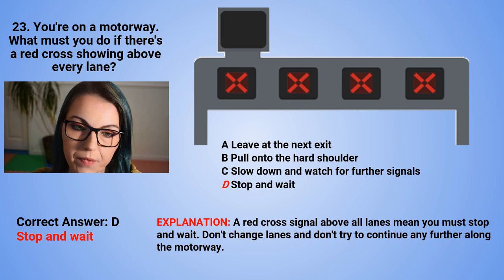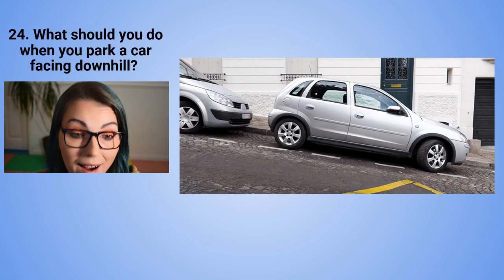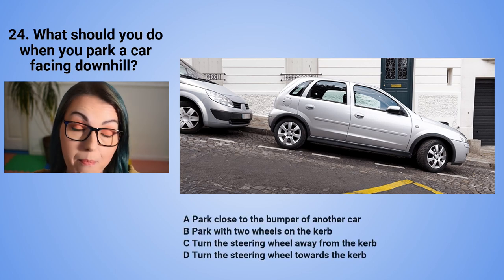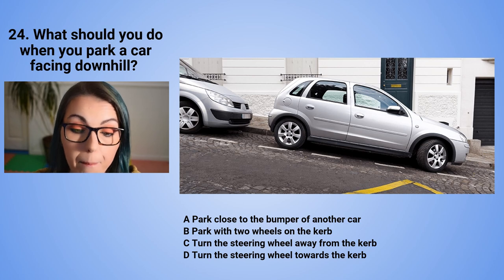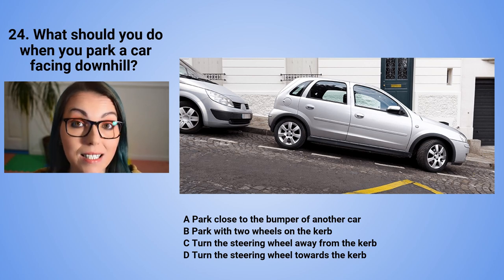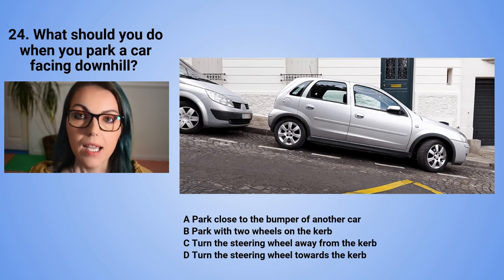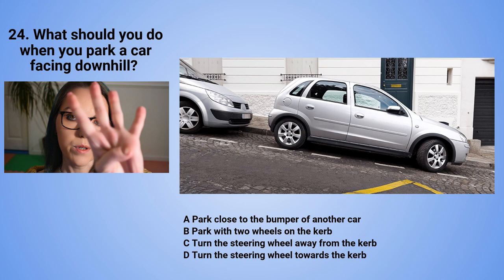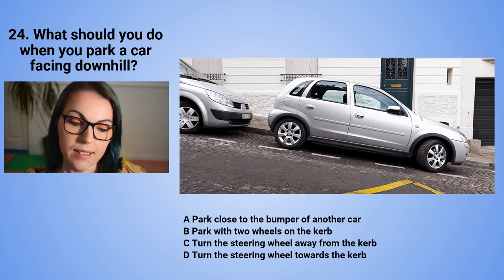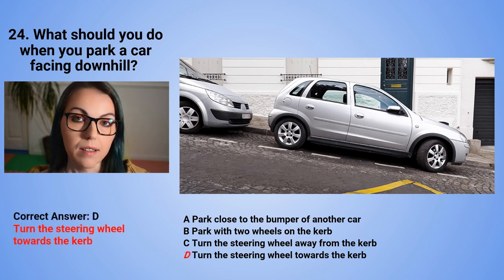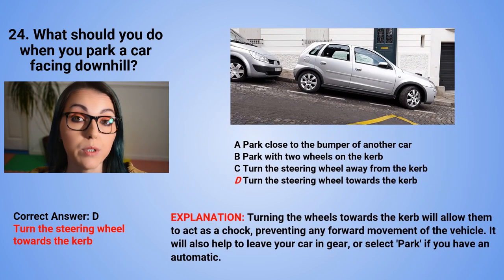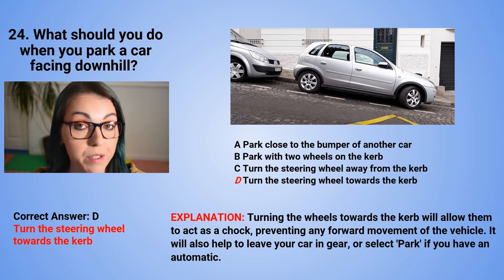Question 24: What should you do when you park a car facing downhill? A. Park close to the bumper of another car. B. Park with two wheels on the curb. C. Turn the steering wheel away from the curb. Or D. Turn the steering wheel towards the curb. The correct answer is D — turn the steering wheel towards the curb. This allows the wheels to act as a chock, preventing any forward movement of the vehicle. It also helps to leave your car in gear, or select park if you have an automatic.